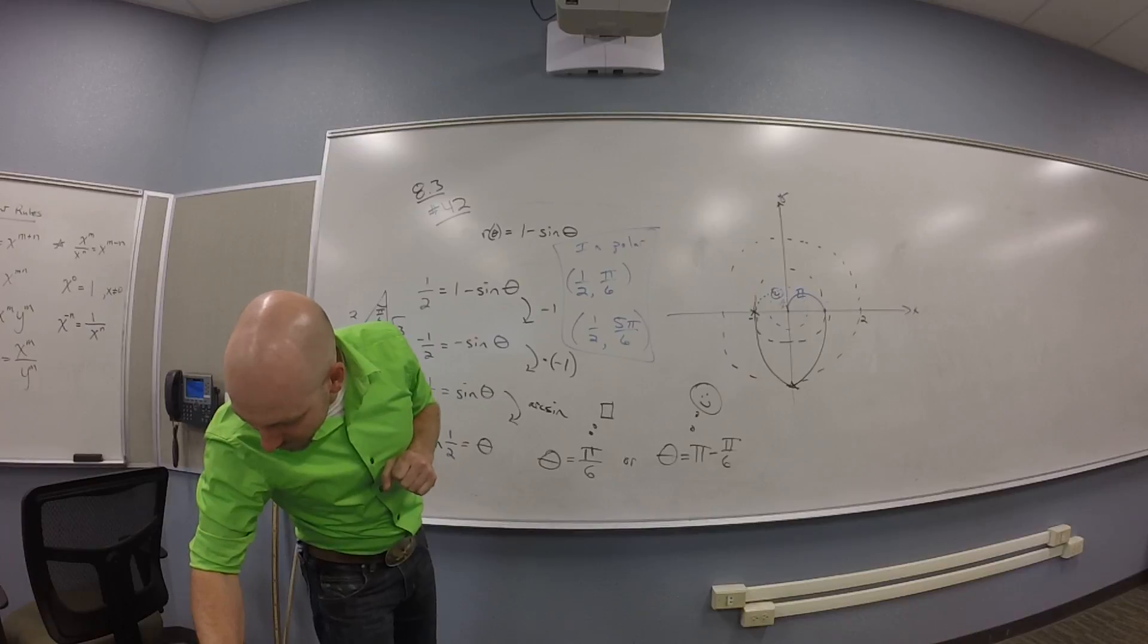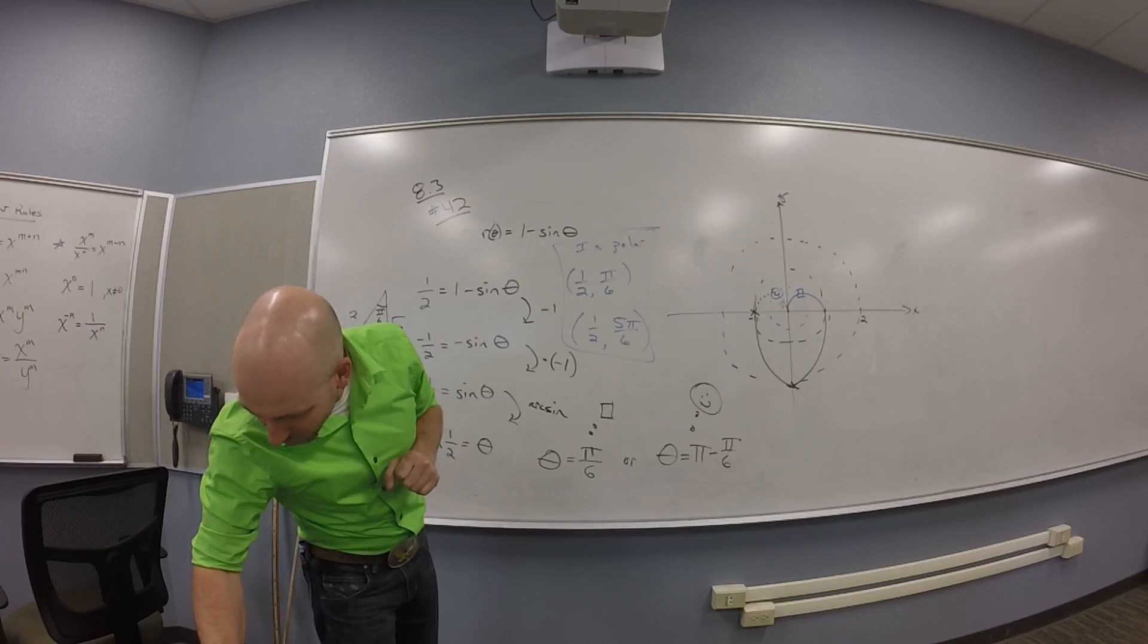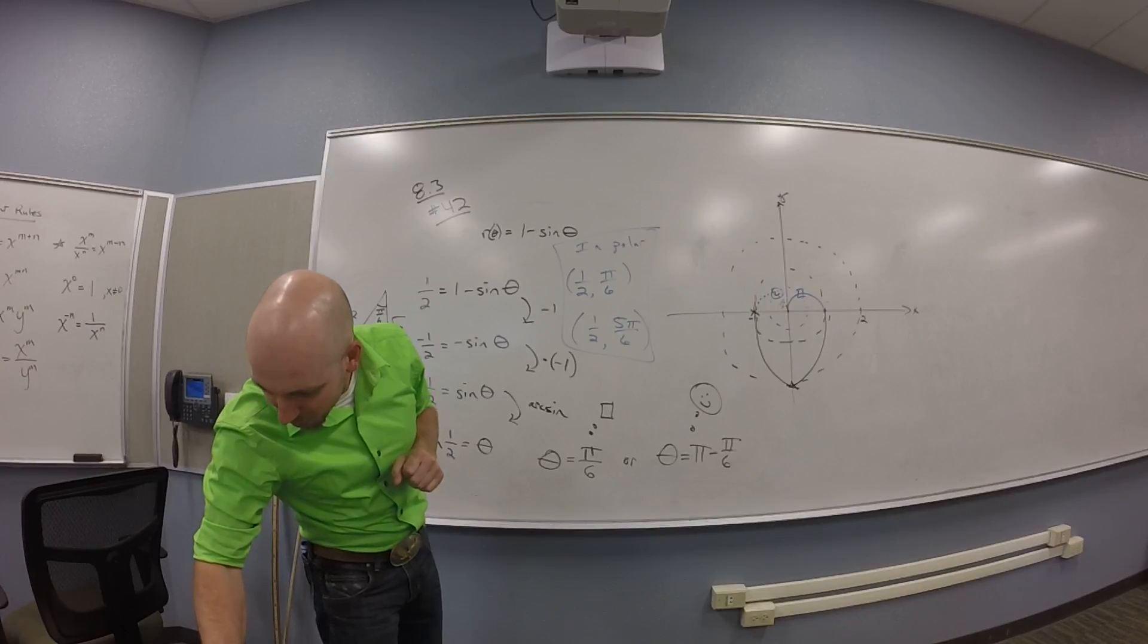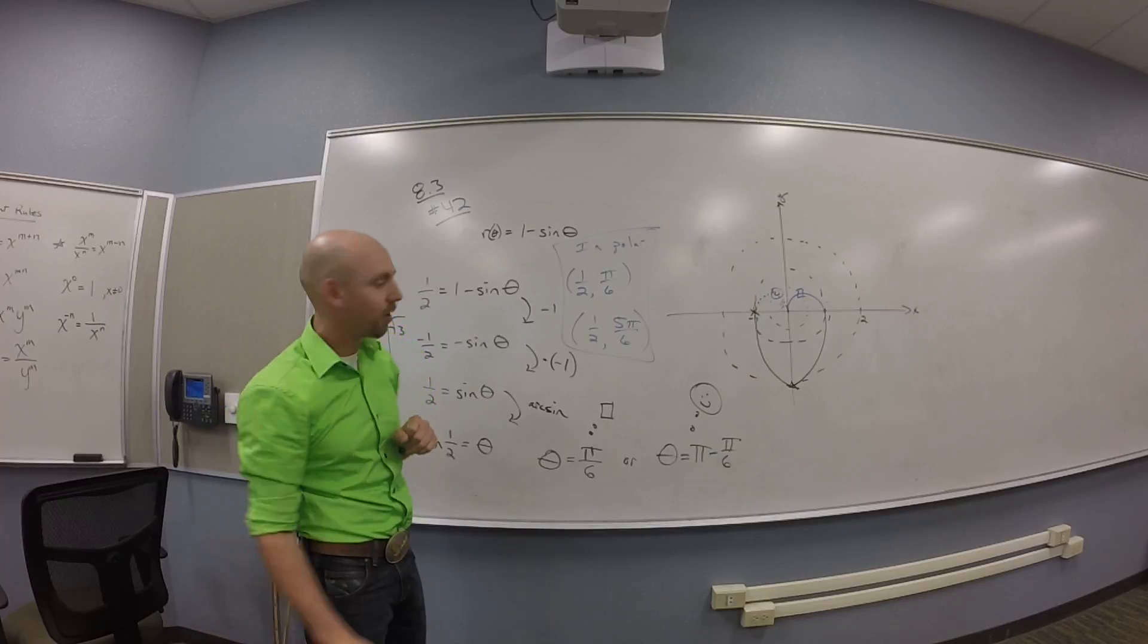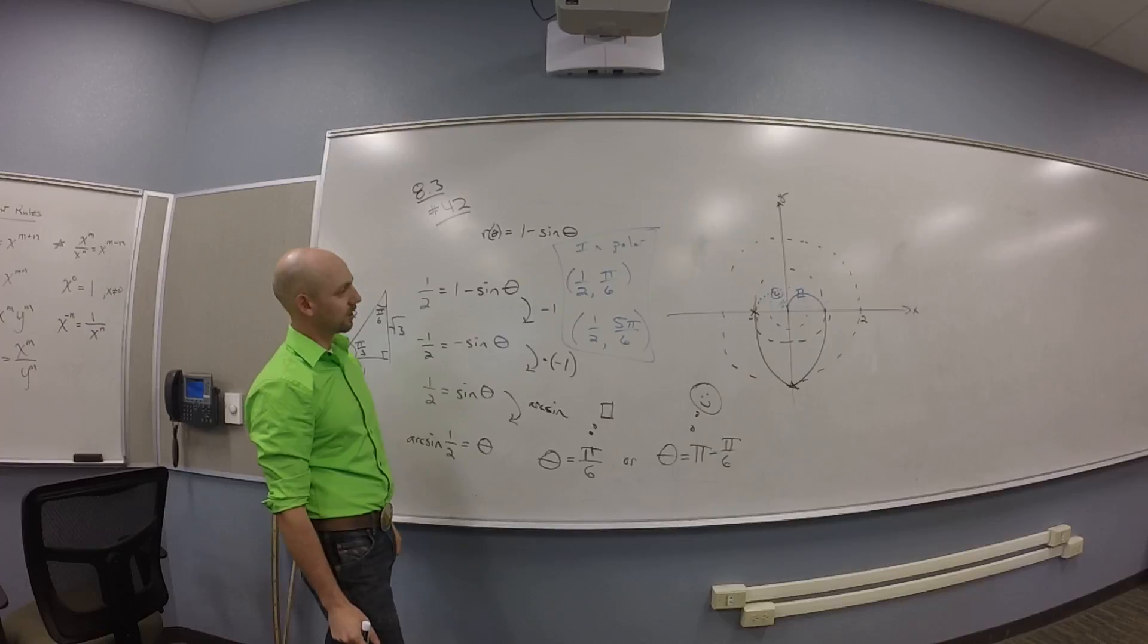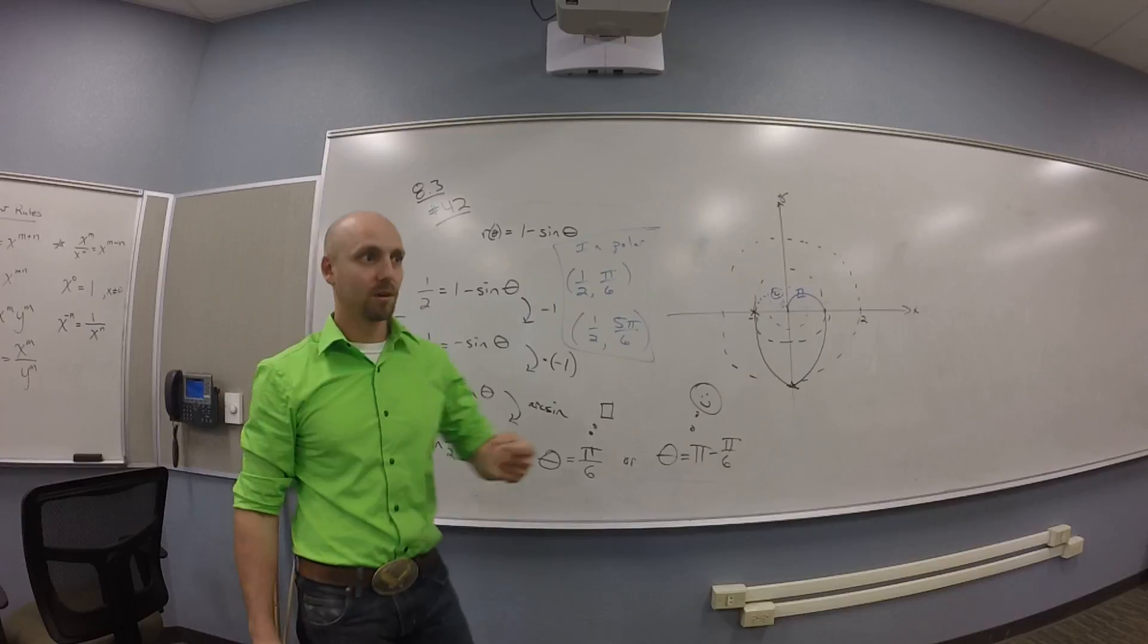So then they say, graph the curve r = 1 - sin(2 theta). Compare this graph to the cardioid. Bugger, that's going to be a whole other example. I'll stop this and then we can graph the other one.